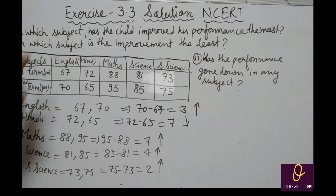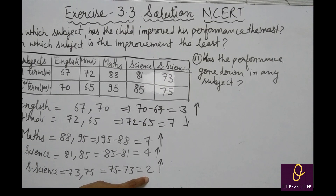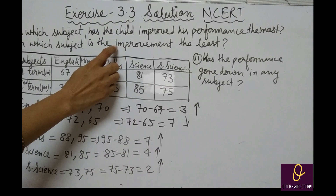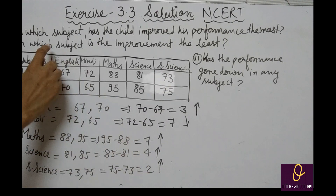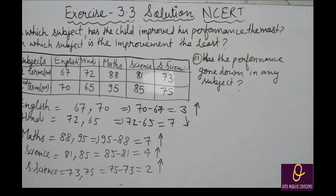Next part: in which subject is the improvement the least? सबसे कम improvement — Hindi में तो decrease हुई, improvement नहीं. तो सबसे कम improvement Social science में है (only 2 marks). In social science, the improvement is the least. Third part: has the performance gone down in any subject? In Hindi, the performance of the child has gone down.